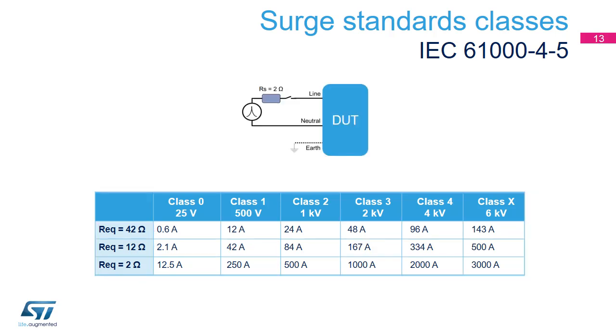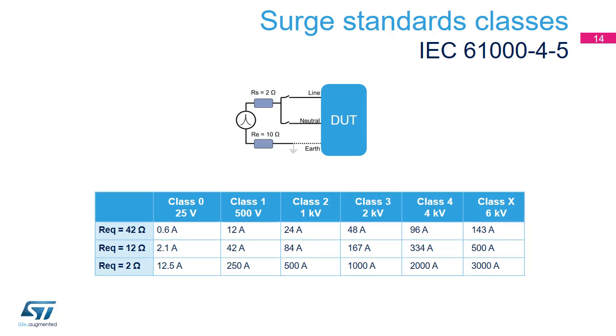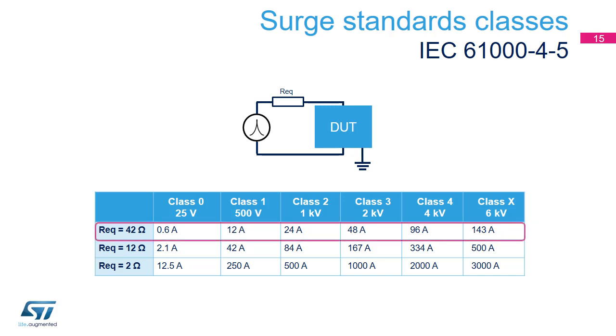The resistance depends on how the DUT to be protected is connected. When the surge happens between two lines not connected to the ground, the serial resistance is 2 ohms. When the surge happens between two lines connected to the ground, the serial resistance is 12 ohms. When the surge happens between two communication lines where there is data exchange, the serial resistance is 42 ohms.